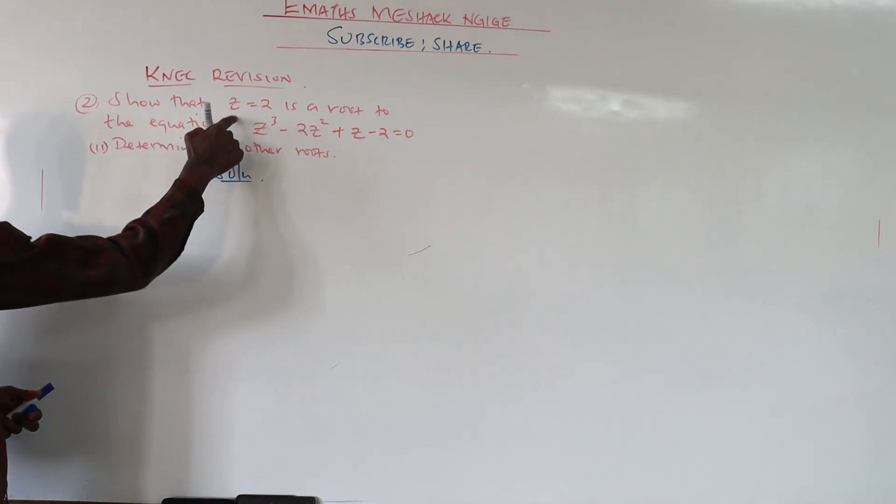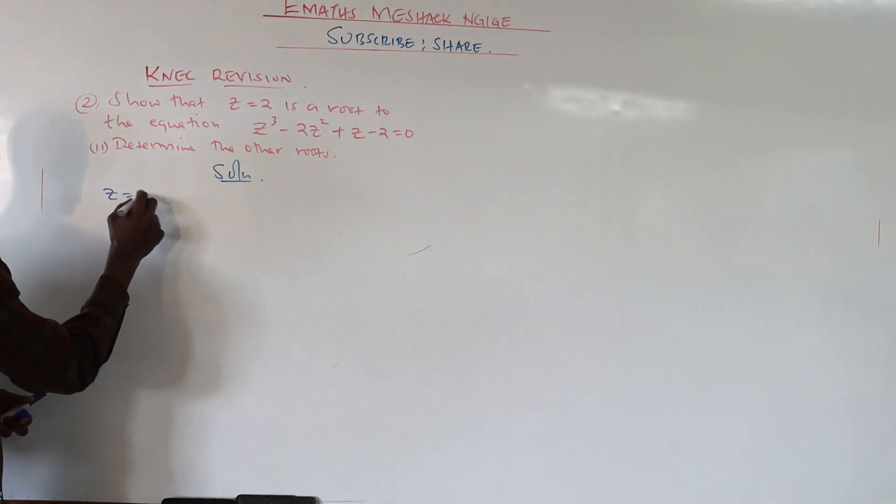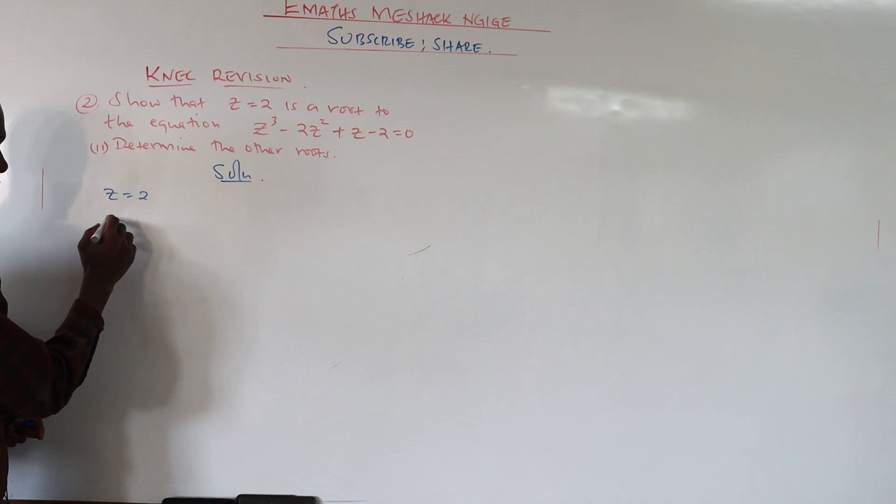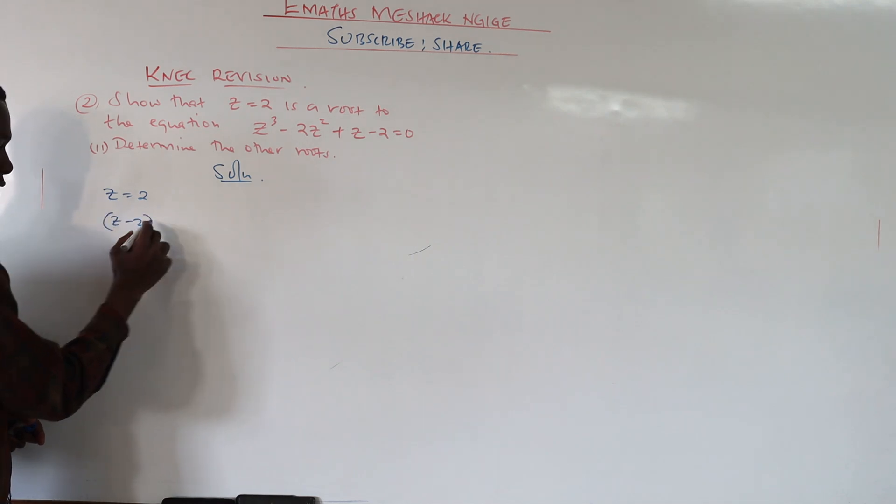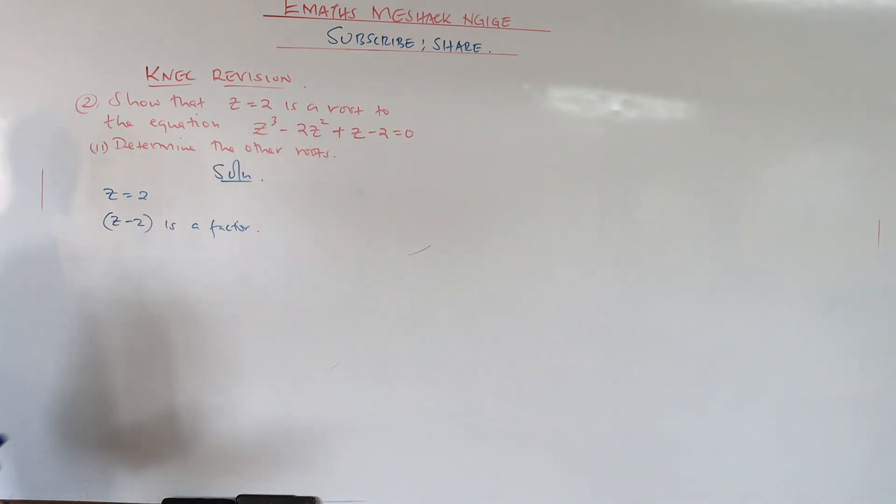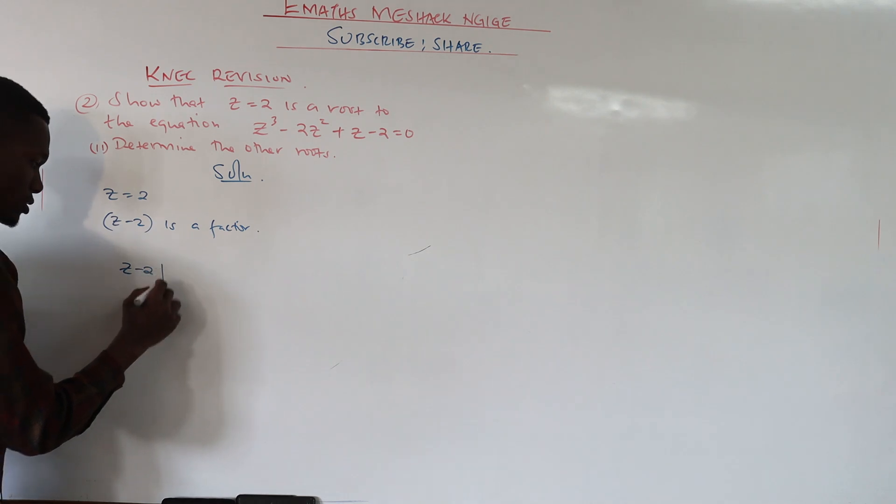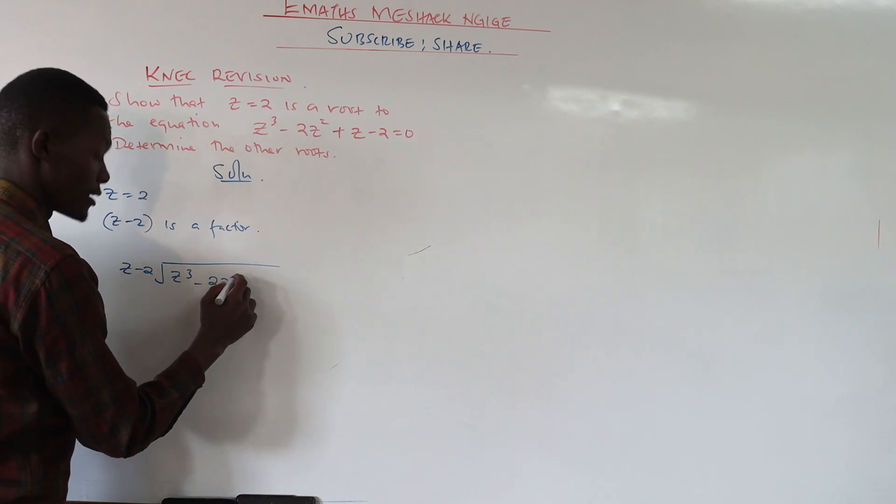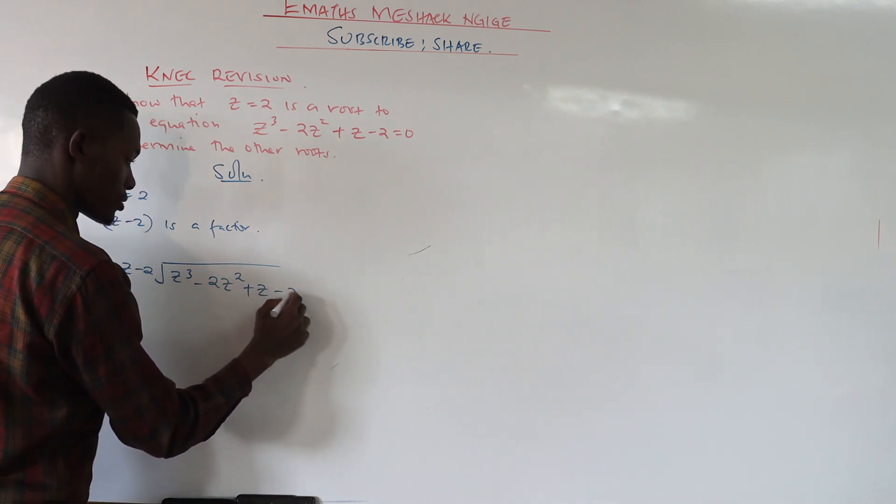Remember these are roots, so z equals 2 is a root. How do we turn into factors? We take 2 to the other side, so we have z minus 2 is a factor. Since we don't have two factors, we take the factor itself and divide the root. So z minus 2 divides z cubed minus 2z squared plus z minus 2.